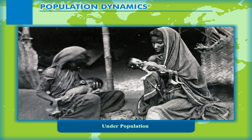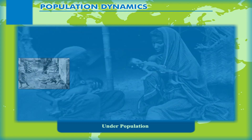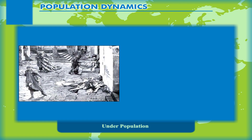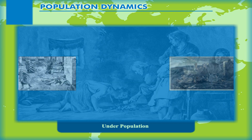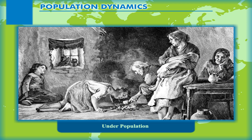Before the 20th century, population decline was mostly observed due to disease, starvation or emigration. The Black Death in Europe, the arrival of Old World diseases to the Americas, the Tsetse Fly invasion of the Waterberg Massif in South Africa, and the Great Irish Famine all caused sizeable population declines.